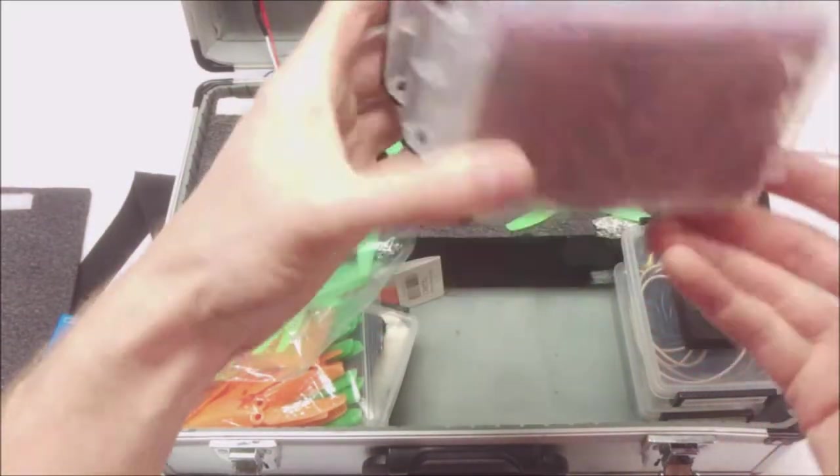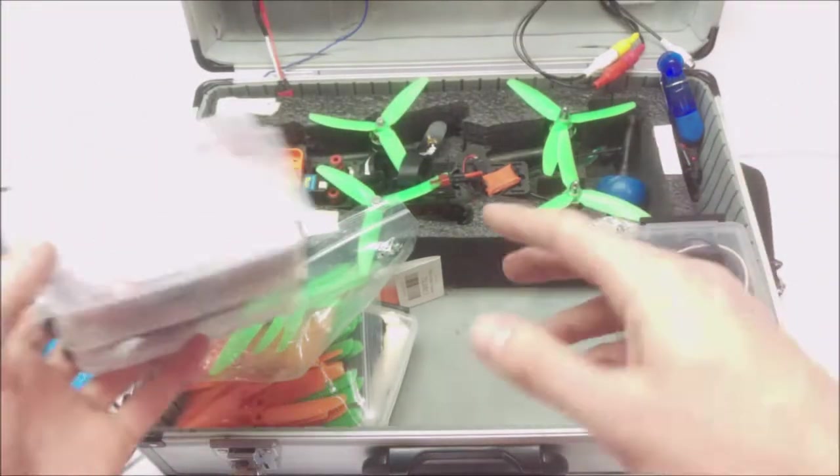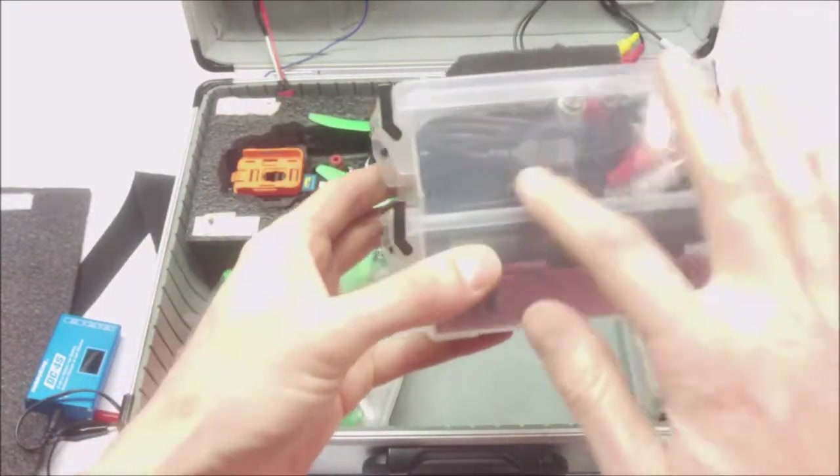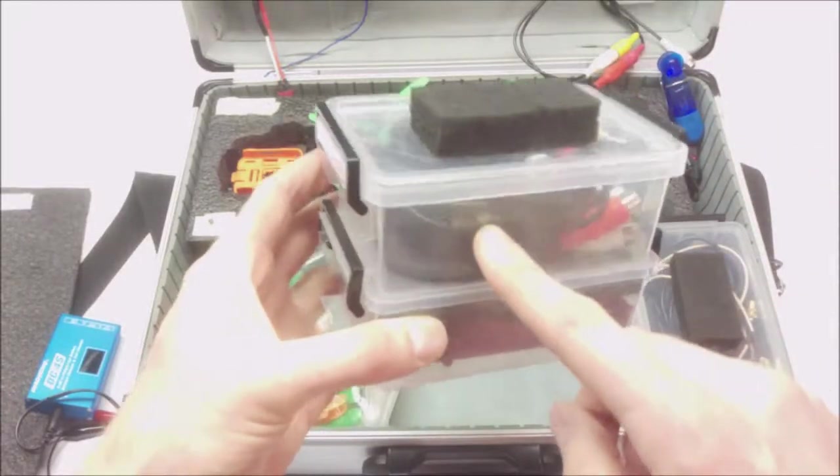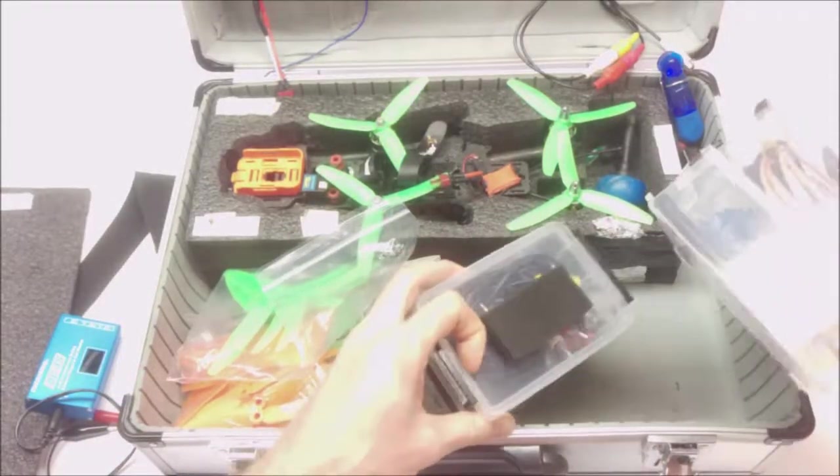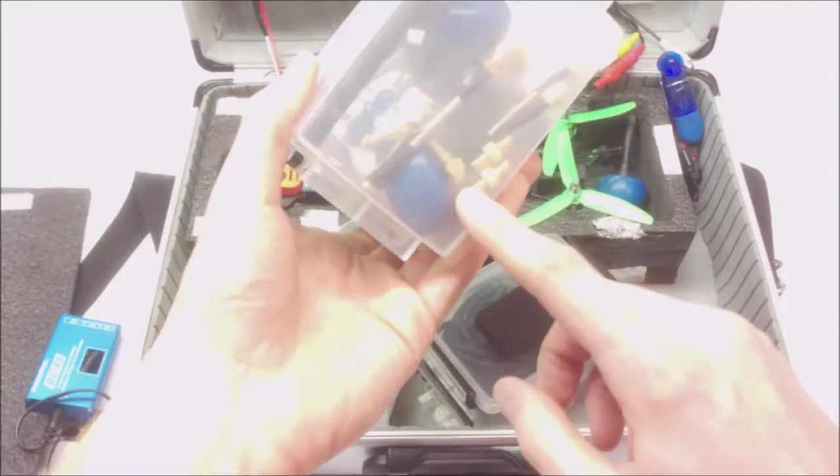I've pretty much used this case for the Vortex, so I've got all my Vortex spare parts there. These are video cables for my goggle hookup, I'll show you that in a second. In here, I've got some different antennas.